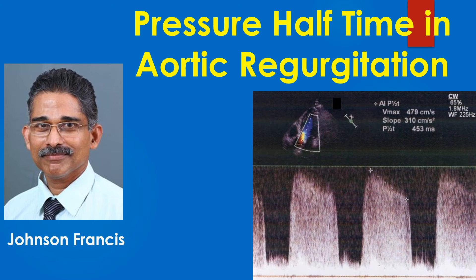Pressure half time of the aortic regurgitation jet is measured from the apical 5-chamber view using continuous wave Doppler echocardiography. PHT decreases as the severity of aortic regurgitation increases.